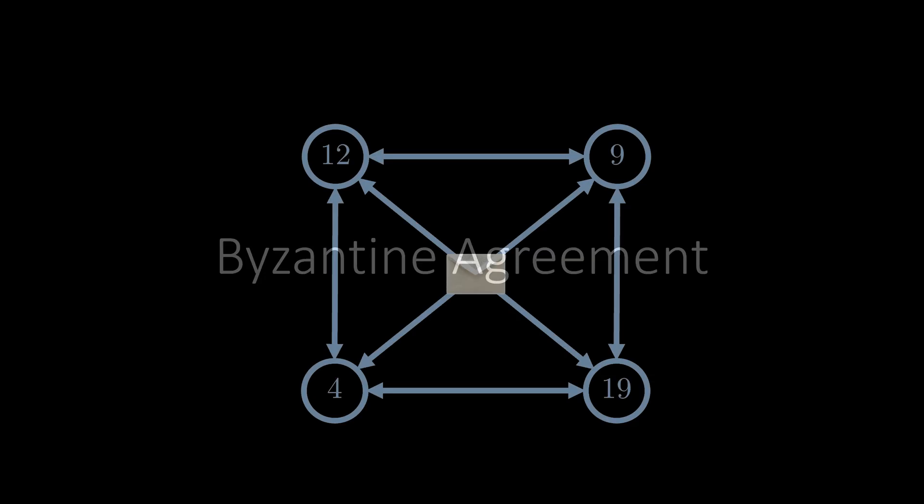In this video we study a famous problem in distributed systems called Byzantine agreement. A related problem is called consensus, where the goal is to reach agreement among the nodes that make up the distributed system.